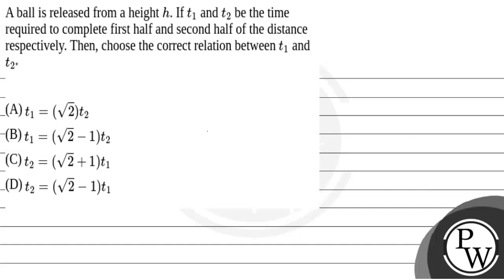Let us read the question. A ball is released from a height h. If t1 and t2 be the time required to complete the first half and the second half of the distance respectively, then choose the correct relation between t1 and t2.